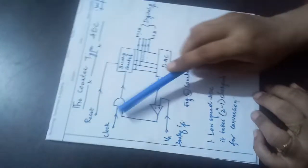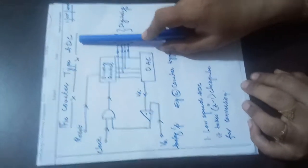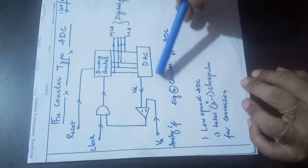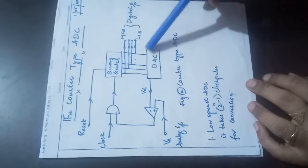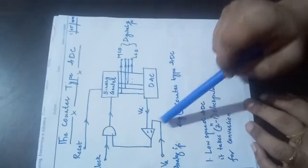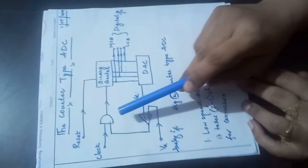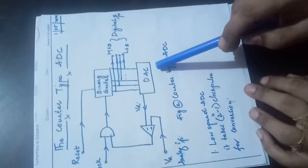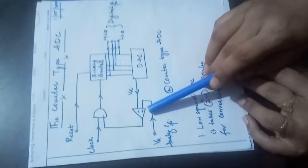Good morning students. Today I am going to explain the Counter Type ADC. In this ADC, we are using a DAC also. Let me explain the different blocks of this ADC. This ADC consists of an AND gate, a binary counter, a DAC (digital to analog converter), and a voltage comparator.